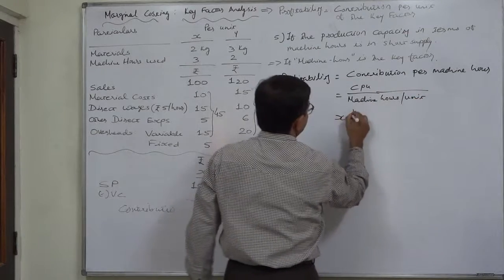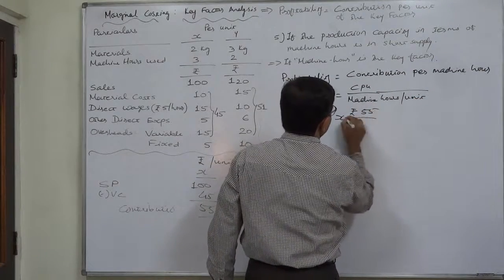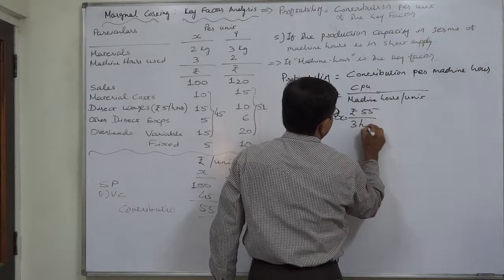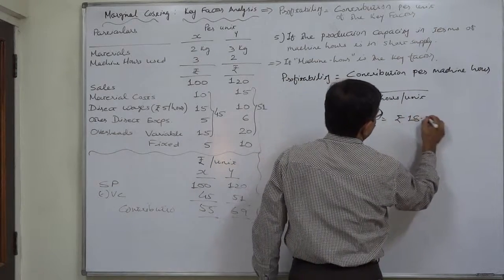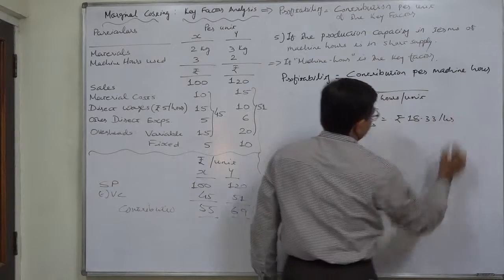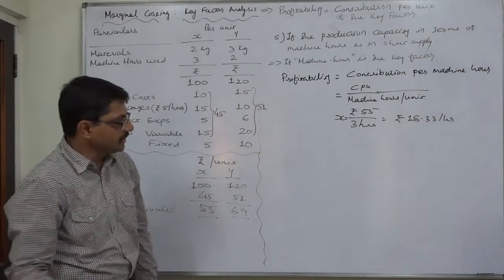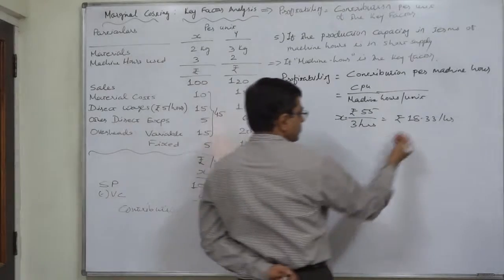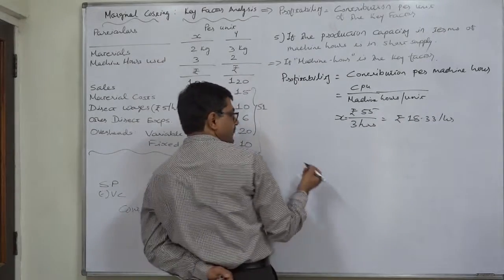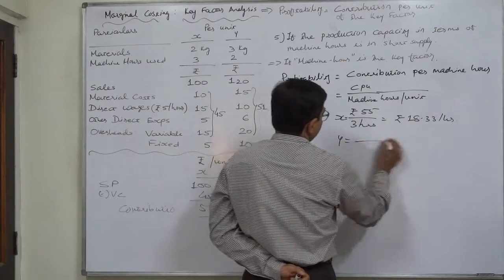For X it will be rupees 55 upon 3 hours, that will be rupees 18.33 per hour. That means if we use one machine hour for X, it generates average contribution of rupees 18.33. And in case of Y, it is rupees 69 per unit and 2 hours per unit.